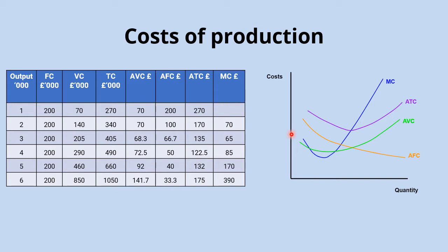But firms' decisions about how much output to produce are really going to be based more on average cost and marginal cost. So in our diagrams and analysis for economics we're going to be focusing on these particular costs of production rather than fixed, variable, and total costs.